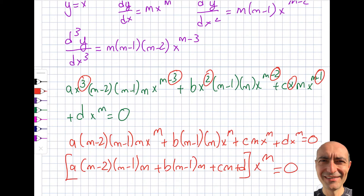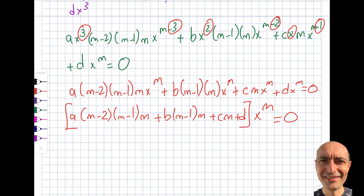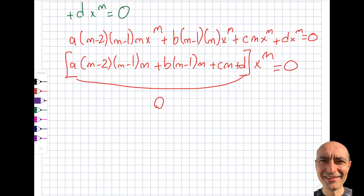Our goal is to find M. We have the situation where either x^M = 0 or the bracket equals 0. Since x^M cannot be zero for all x values of interest, the bracket must equal zero. This gives us a nice third-order polynomial equation in M — a third-order equation will yield three roots.